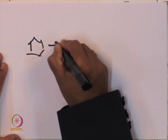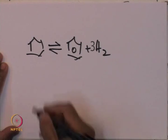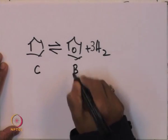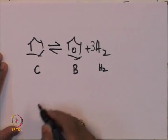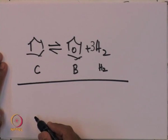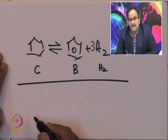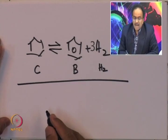In today's lecture, we are going to look at a simple example and see how experimental data can be used to verify the validity of the rate equation. For that, we consider a real example: a dehydrogenation reaction where cyclohexane dehydrogenates to give benzene and hydrogen. I will denote cyclohexane as C, benzene as B, and hydrogen as H₂.